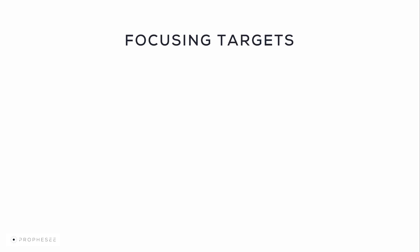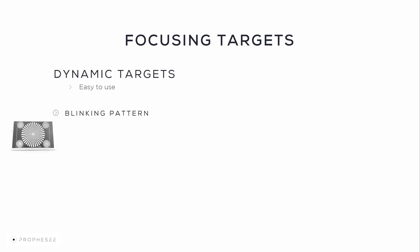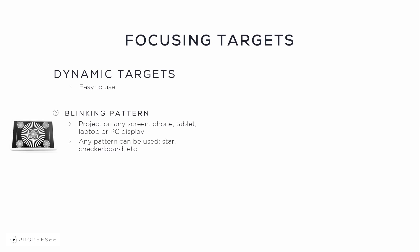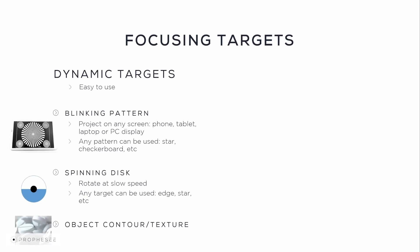If your setup permits, we suggest using dynamic targets. For example, a blinking pattern can be shown on any display like a telephone screen, tablet, laptop, or computer screen. It should be placed in front of the camera at the distance of the target object. Any pattern can be used, for example a star or a chessboard. You can also use a spinning disc with any target on it like an edge, a star, or a chessboard. You can try to focus directly on the object, its contour, and or the texture. Ideally the object should move slowly to be able to be focused.